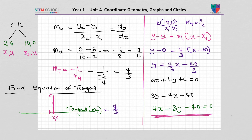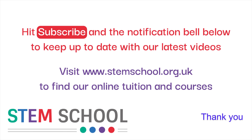Therefore the final answer is 4x minus 3y minus 40 equals 0, where a equals 4, b equals minus 3, and c equals minus 40.